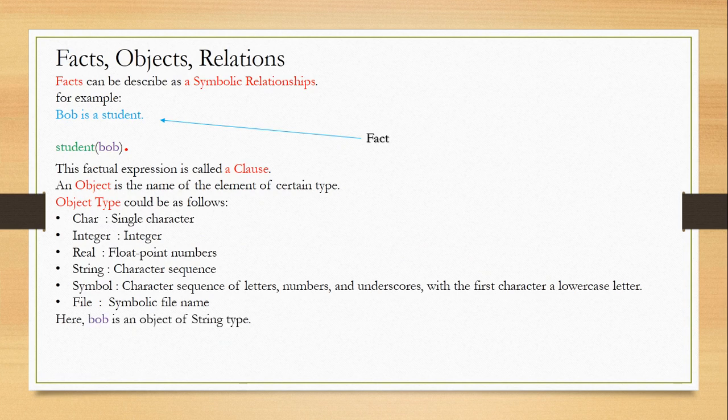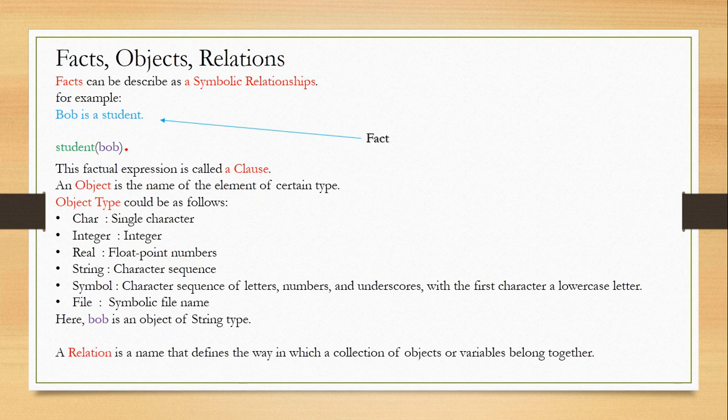So here I can say that Bob is an object of string type. Now you must be thinking about the relation. Relation is a name that defines the way a collection of objects or variables belong together. Here, Bob is actually a student, so student is a relation with Bob. That is what a relation is - here student is a relation. Isn't it very simple?